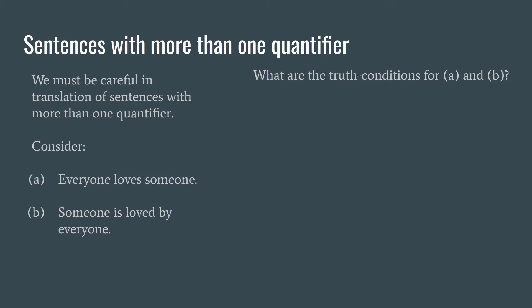So first thing to be careful about is sentences with more than one quantifier. Consider here A and B. A says everyone loves someone and B says someone is loved by everyone. These are two very similar sentences, and the first thing we want to point out is that they are similar but different. Second thing we want to point out is that they contain two quantifiers. Here we have everyone and someone. Both of these are quantificational phrases. Now B has the very same quantificational phrases, the very same relational predicate, but the quantifiers are in a different order. So order counts with quantifiers.